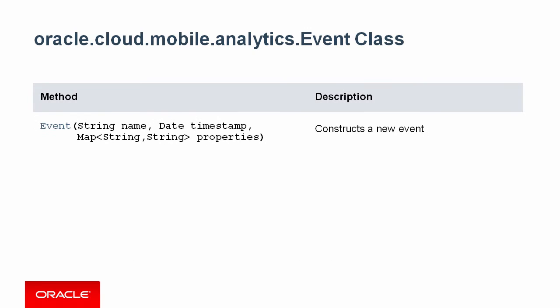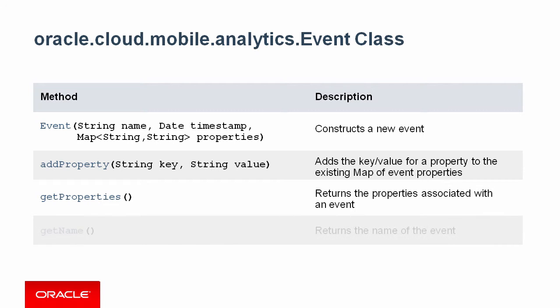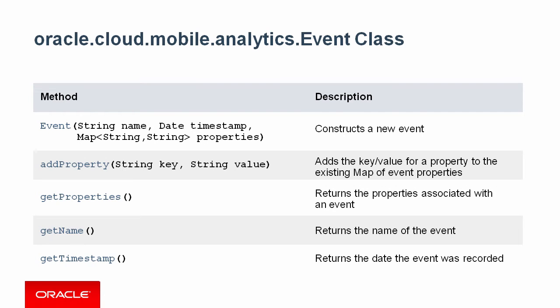The Event class contains methods for constructing new events, for setting and getting properties for an event, and returning information about an event, such as the event name or timestamp.